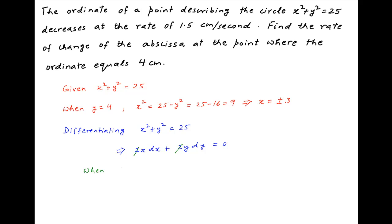The two cancels. Now we know that when y equals 4, x equals plus or minus 3 as determined above. From the problem, we know that the rate of change of the ordinate, dy, equals 1.5 centimeters per second, and since it is decreasing, it is negative in sign.